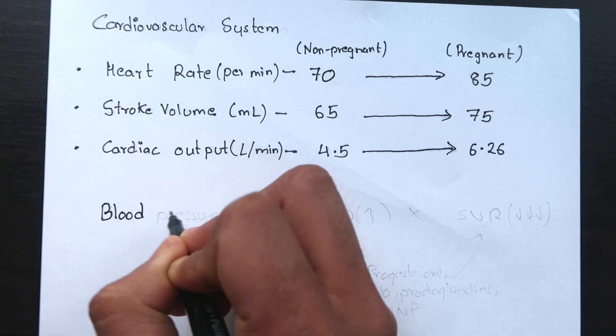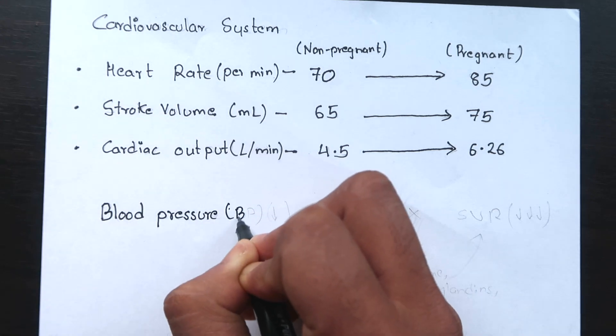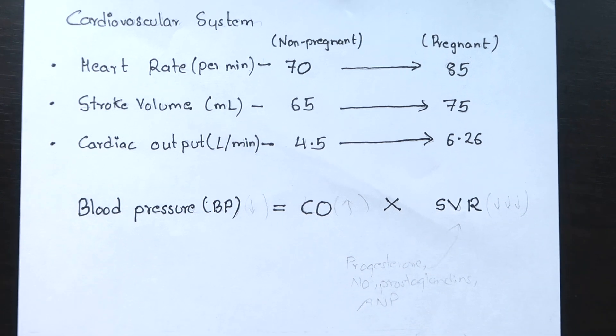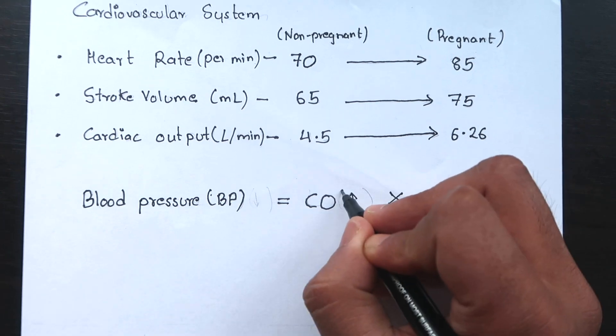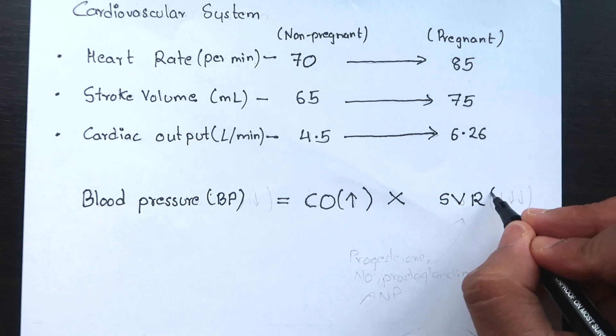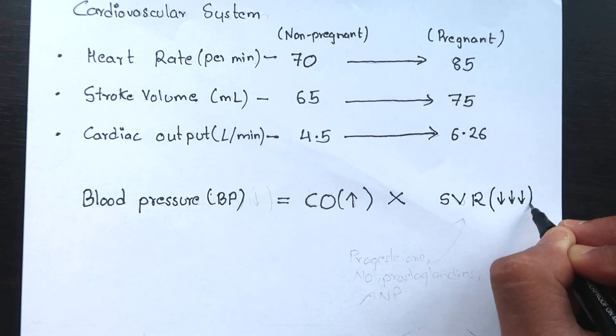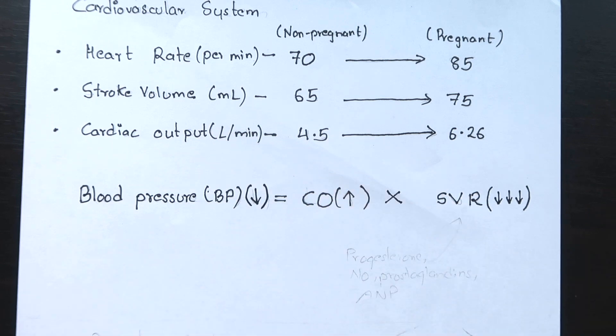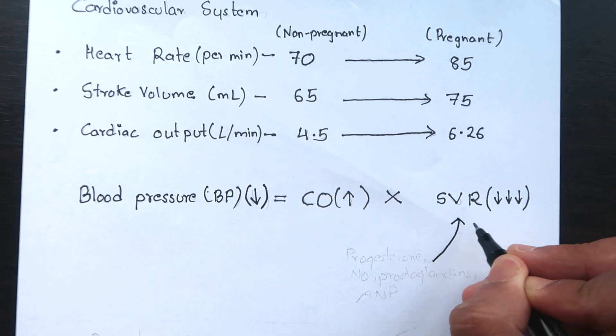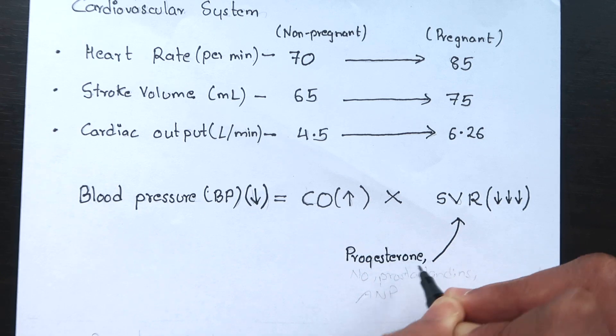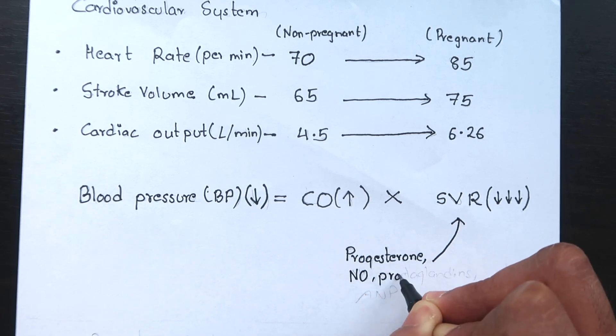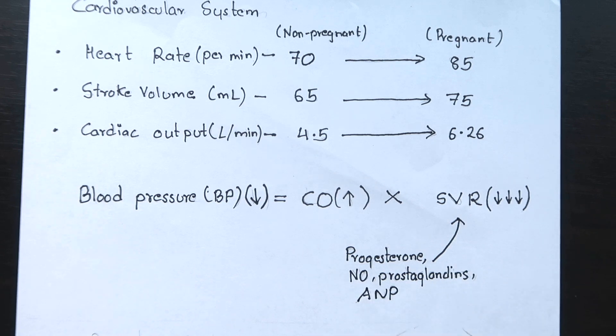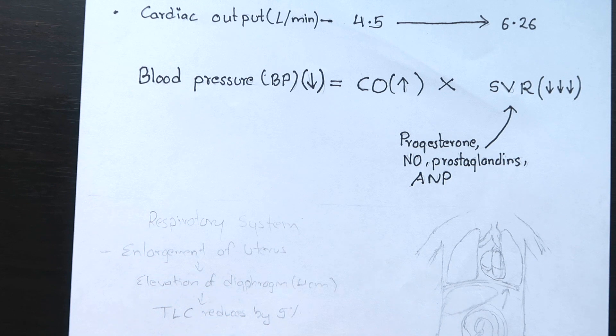We know blood pressure is the product of cardiac output and systemic vascular resistance. Cardiac output is increased during pregnancy but the systemic vascular resistance is decreased by higher amount. So the blood pressure also decreases. The reduction in systemic vascular resistance is due to smooth muscle relaxing effect of progesterone, nitric oxide, prostaglandins or atrial natriuretic peptide.